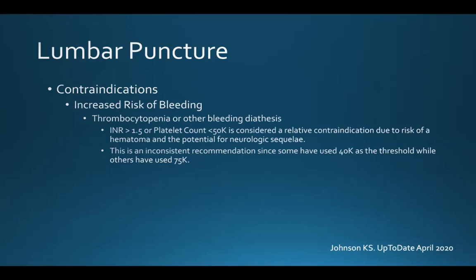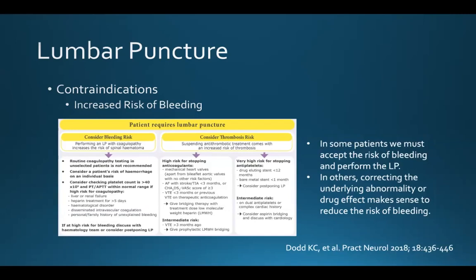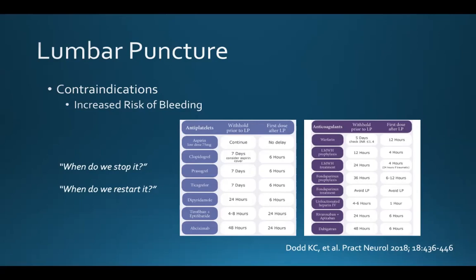This is an inconsistent recommendation — platelet count thresholds range from as low as 40,000 to as high as 75,000 in the literature. We also want to think about patients on ongoing anticoagulation or antiplatelet medication. In some patients we have to accept the risk of bleeding, but in others, correcting the underlying abnormality makes sense. Charts are available as good references for when to stop and restart medications.